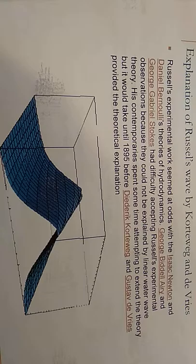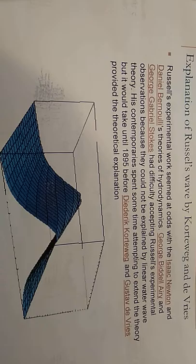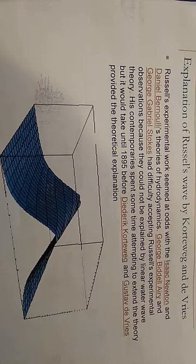The explanation of Russell's wave by Korteweg-de Vries: Russell's experimental work seemed at odds with Isaac Newton and Daniel Bernoulli's theories of hydrodynamics. George Biddell Airy and George Gabriel Stokes had difficulty accepting Russell's experimental observations because they couldn't be explained by linear water wave theory. His contemporaries spent some time attempting to extend the theory, but it would take until 1895 before Diederik Korteweg and Gustav de Vries provided the theoretical explanation.